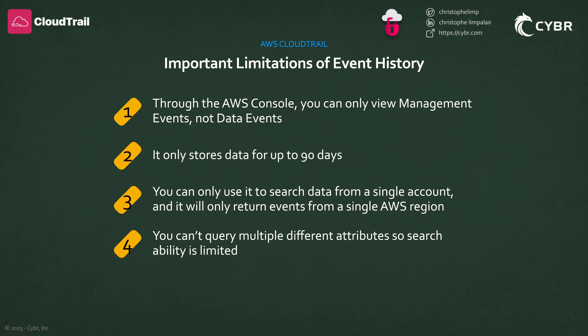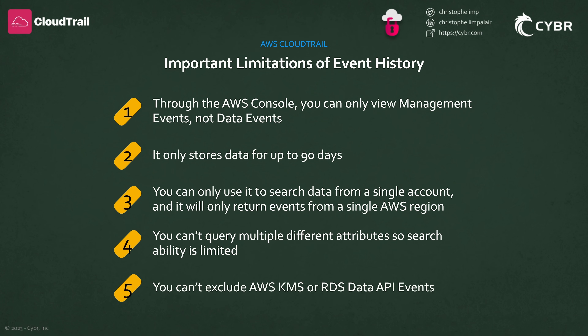Number four, you can't query multiple different attributes. So unlike with CloudTrail Lake, searchability is going to be very limited. And finally, number five, you cannot exclude AWS KMS or Amazon RDS data API events. Sometimes you'll want to hide that information for security purposes, and in this case, you wouldn't be able to do that.